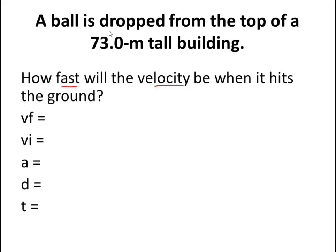Once again, a ball is dropped from the top of a 73 meter tall building. Well, I have my displacement here. My displacement is 73.0 meters. Well, we all know that an acceleration is going to be negative 9.8 meters per second squared. That's the acceleration of gravity here on Earth.